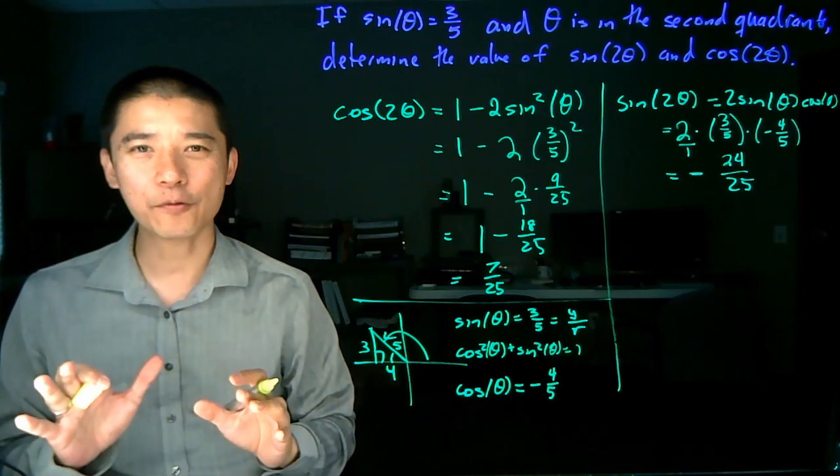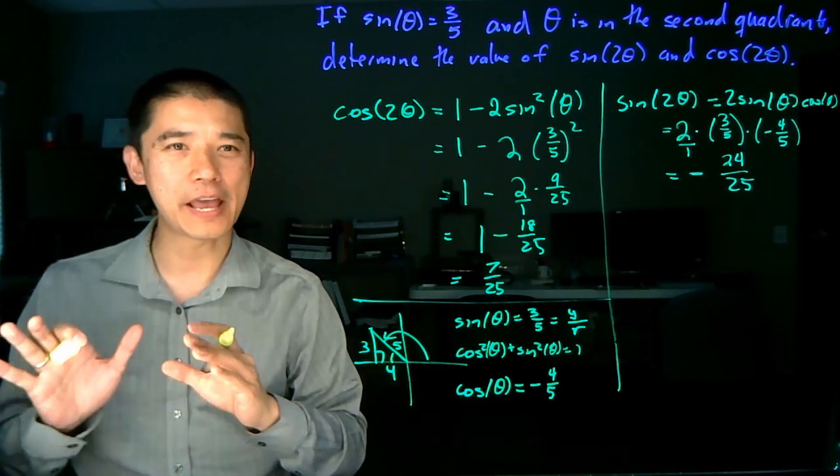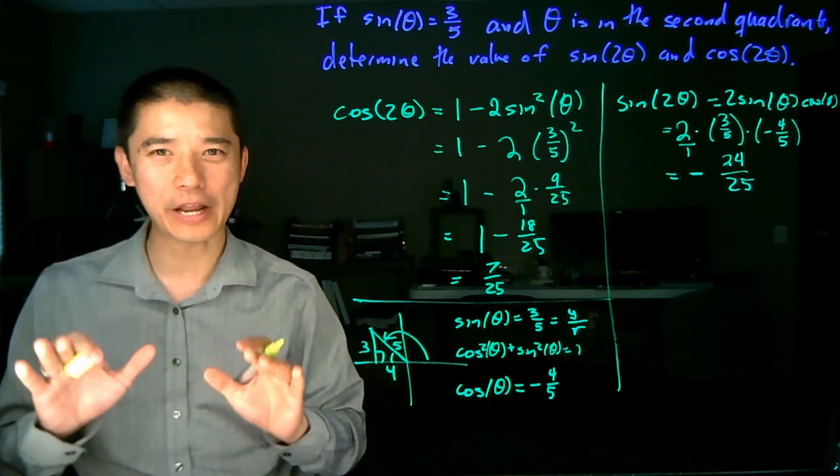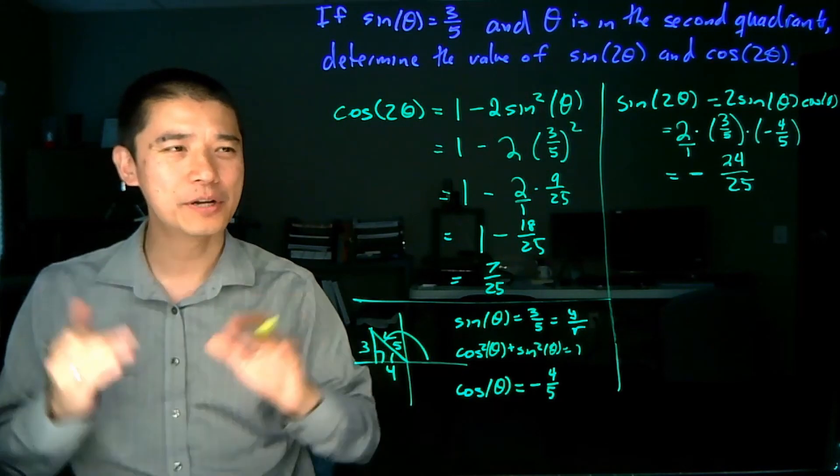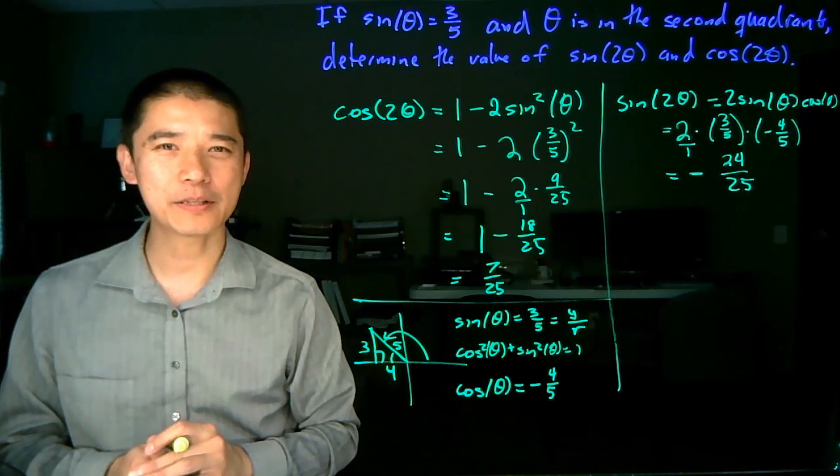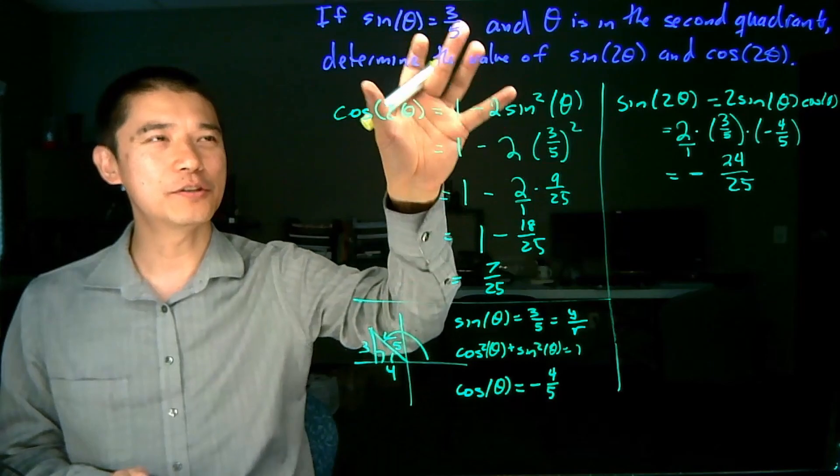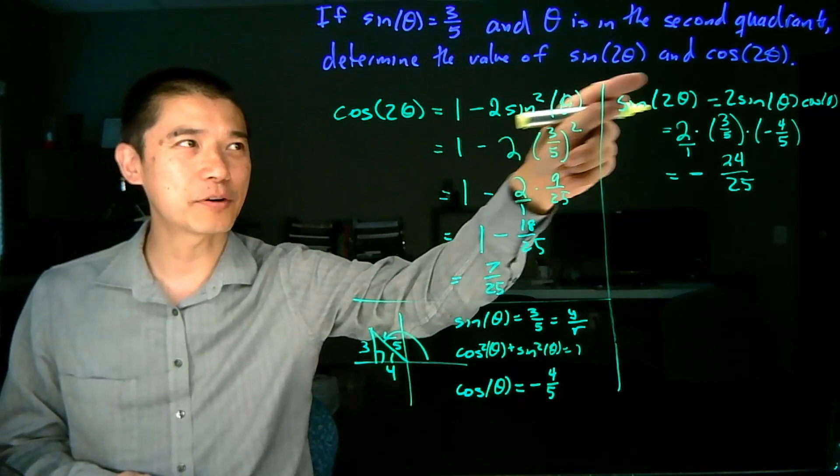Now, just like before, you will notice that we did not calculate what the angle theta really is. We only know these two values about it. We don't actually know the angle. And so that's one of the tricky parts about this is that your job is not actually to find theta, but to use the formulas to calculate these particular values.